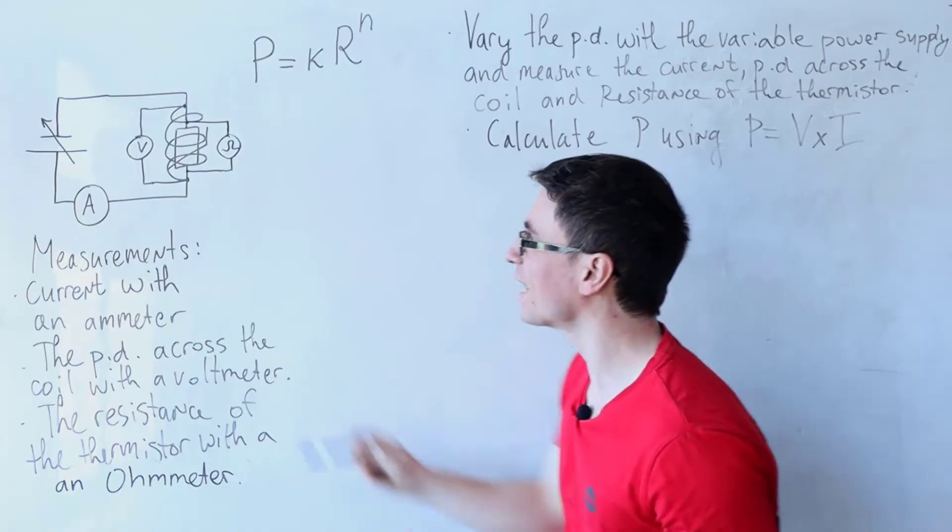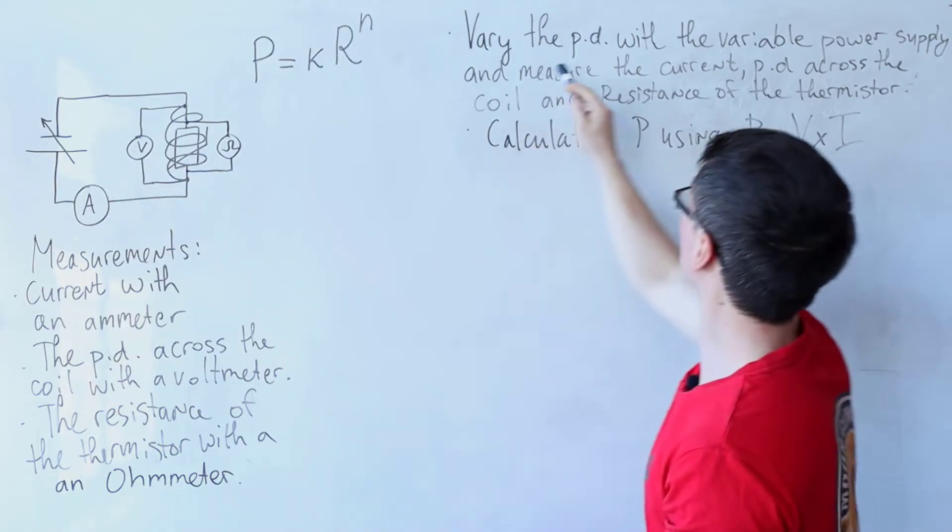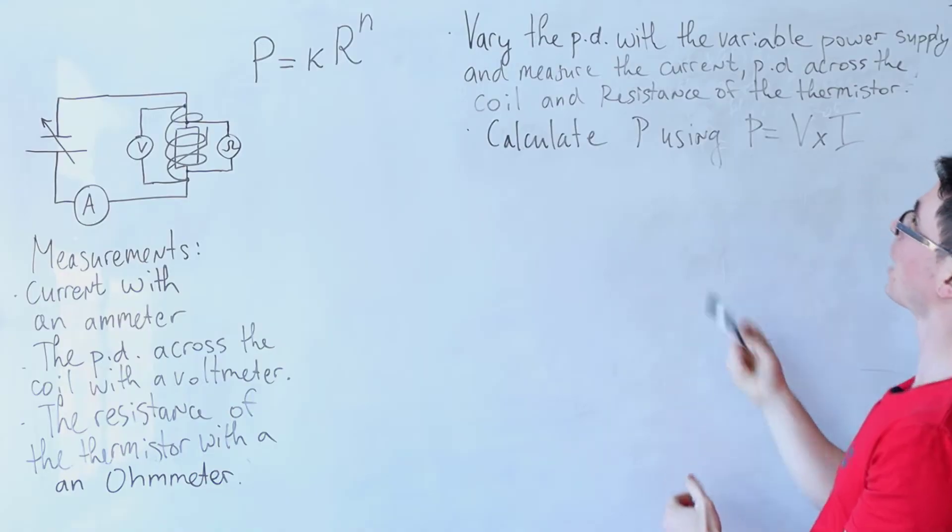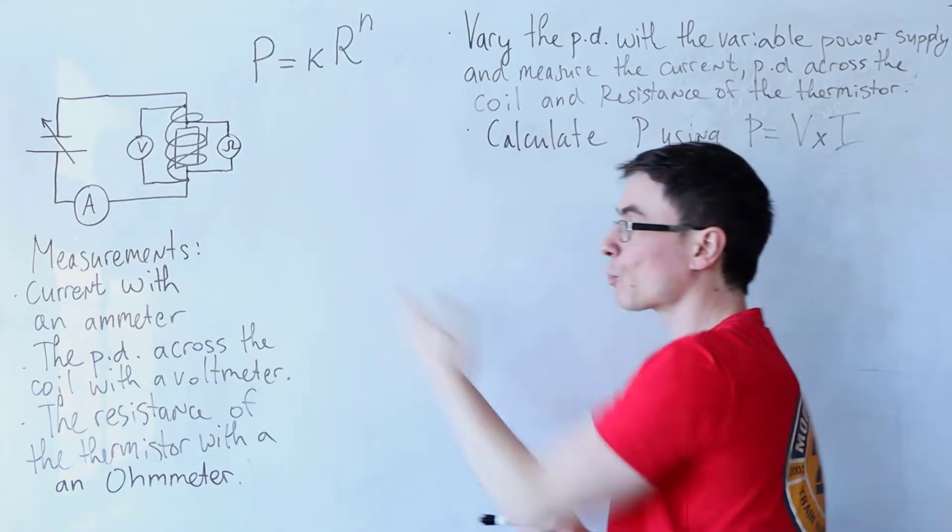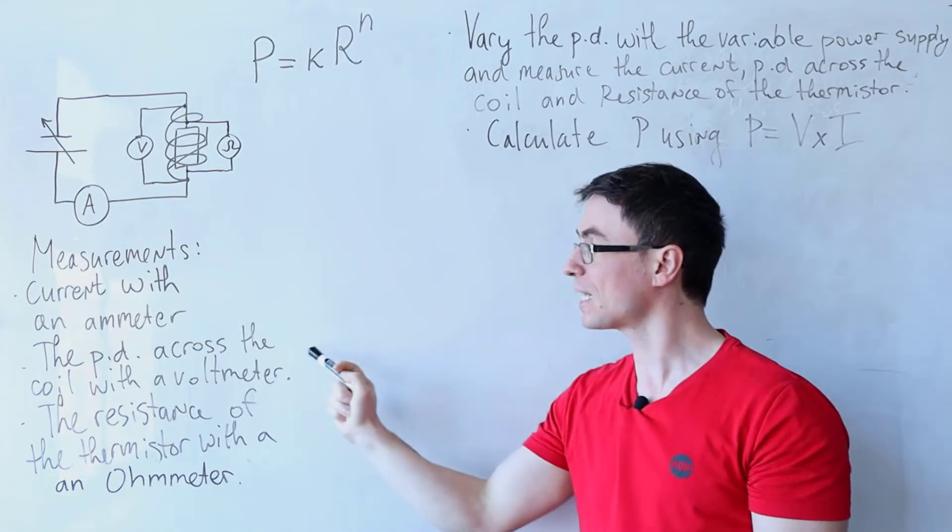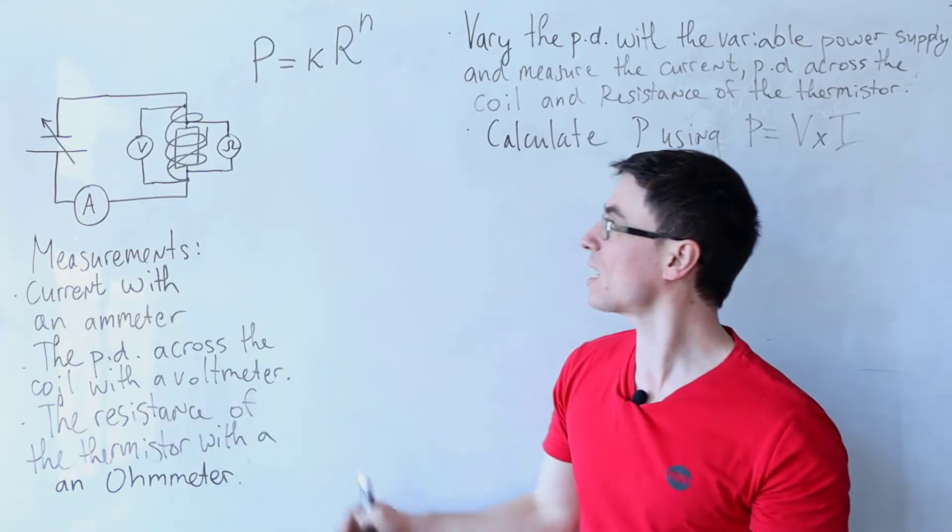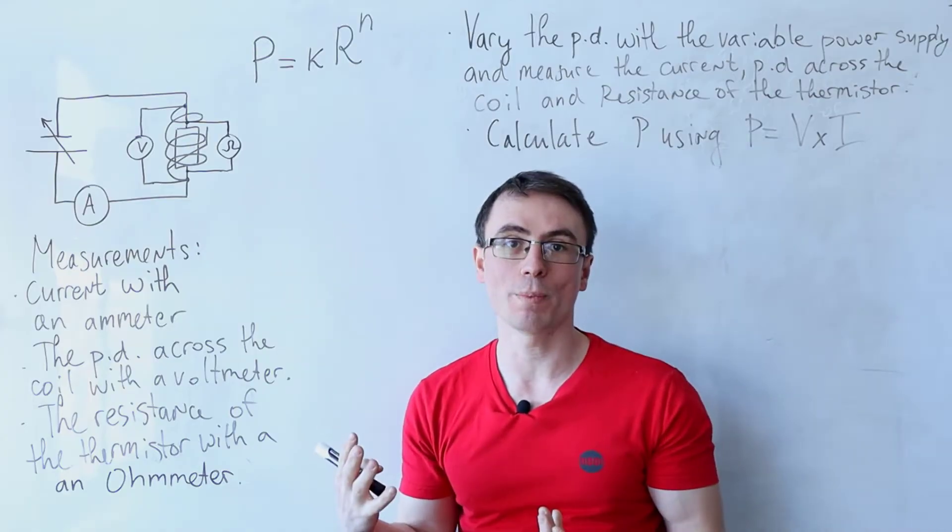Notice that I've added a variable power supply so that I could vary the potential difference with that power supply, while measuring the current with an ammeter, the PD across the coil with a voltmeter, and the resistance of the thermistor with an ohmmeter.